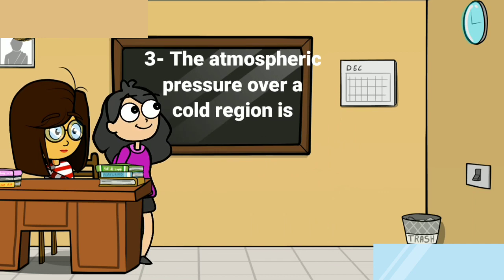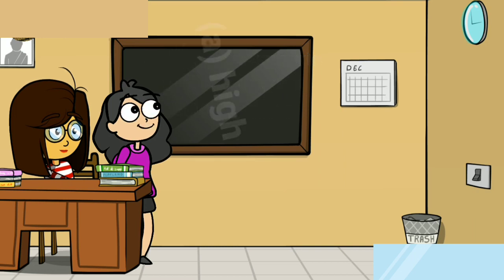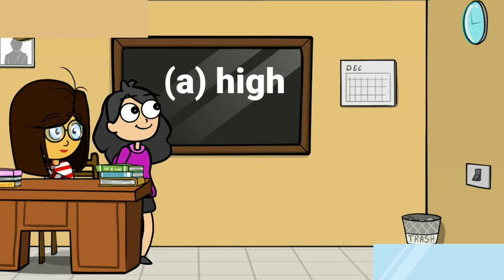The third question: the atmospheric pressure over a cold region is — the options are high, low, normal, or none of these. Always remember that the atmospheric pressure over a cold region is high. So the answer is A, high.